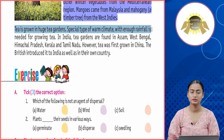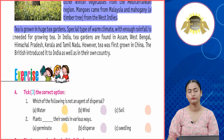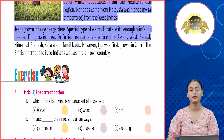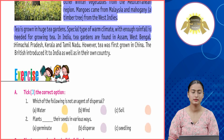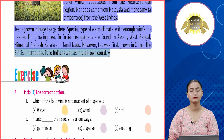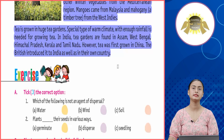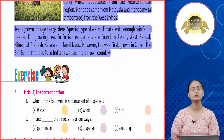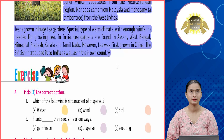The British introduced tea and lychee from China, and cabbage, cauliflower, and other winter vegetables from the Mediterranean region. Mangoes came from Malaysia, and mahogany, a timber tree, from the West Indies. Tea is grown in huge tea gardens in India — in Assam, West Bengal, Himachal Pradesh, Kerala, and Tamil Nadu — though tea was first grown in China and introduced to India by the British.